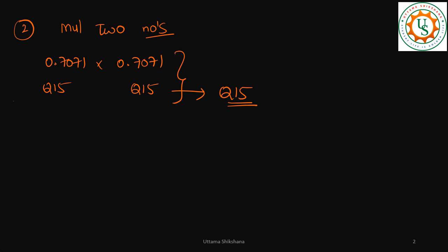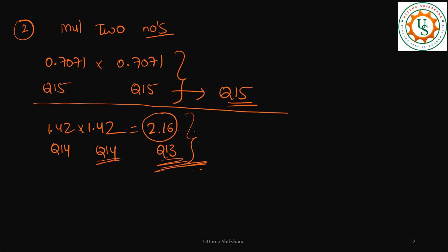But earlier we had seen that I have taken 1.42 into 1.42 in the previous video, and I was seeing that it is coming up to 2.16 something like that. So here I had taken Q14 Q14 but the output I had to keep in Q13 format, because this was going beyond the range of Q14 and in order to provide the saturation and to get the best accuracy I had to keep it in Q13. But that will not happen in case of Q15.